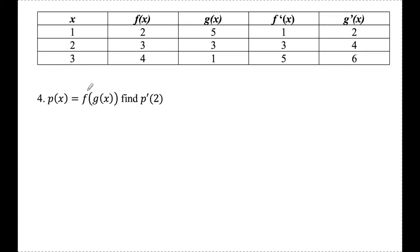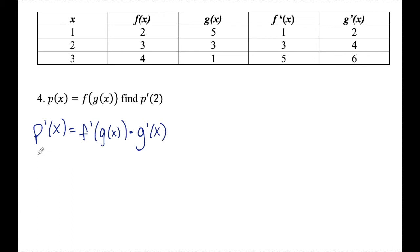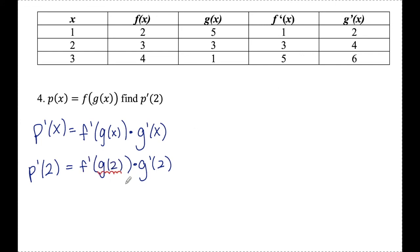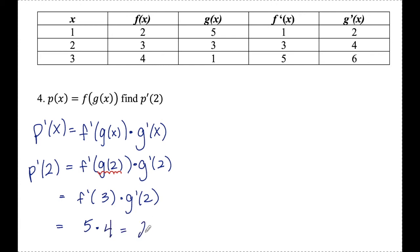Number four: p of x is equal to f of g of x. Find p prime of 2. This is a composition of functions, so I need to apply the chain rule. Chain rule says derivative of the outside, leave the inside alone: f prime of g of x times g prime of x. Plugging in 2, I get f prime of g of 2 times g prime of 2. Working from the inside out, g of 2 is 3, so this becomes f prime of 3 times g prime of 2. f prime of 3 is 5 and g prime of 2 is 4, so my answer is 20.